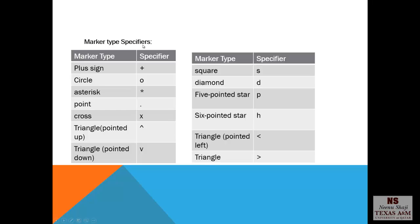There are marker type specifiers as well. For the plus sign, you put the plus sign, circle the letter o, asterisk that's a star, point you just put a dot, cross, triangle pointed up, or triangle pointed down that's the letter v, square the letter s, diamond d, five pointed star, six pointed star, triangle pointed to the left, and triangle pointed to the right.